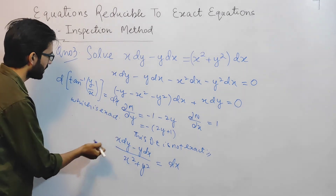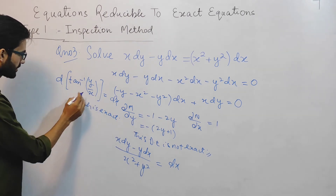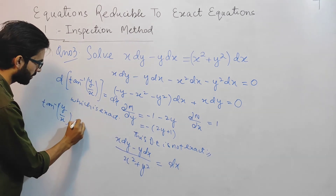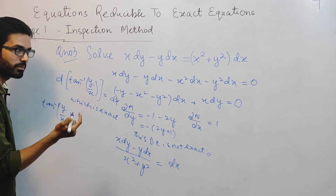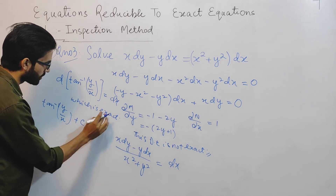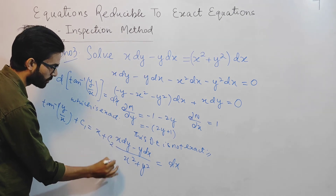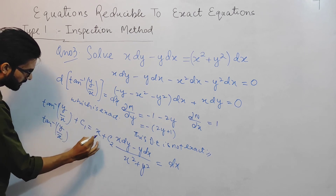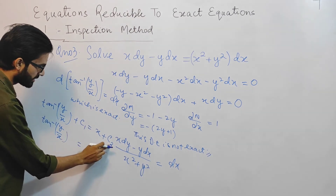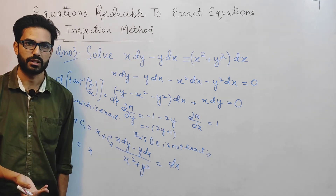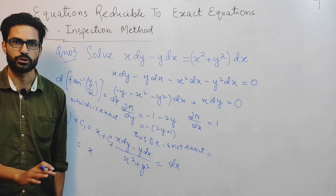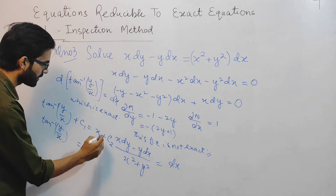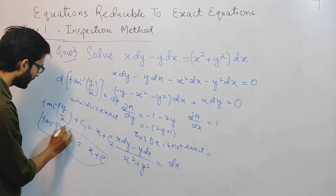Now I will find the solution by integrating both sides. Integrating the left side: the integration and differentiation signs cancel, giving tan⁻¹(y/x) plus constant c1. Integrating the right side gives x plus constant c2. So tan⁻¹(y/x) = x + (c2 minus c1). Since c2 minus c1 is just another constant, we call it c. Therefore the final solution is tan⁻¹(y/x) = x + c.